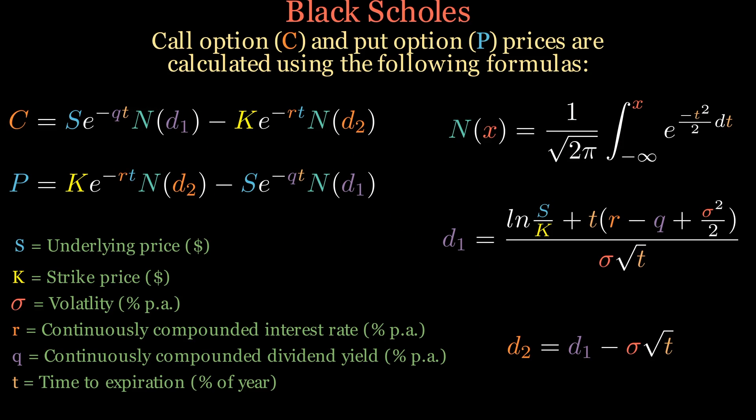The Black-Scholes formula takes into account various factors, such as the current stock price, the strike price, which is the value that the stock will be bought or sold if the option is exercised, the time to expiration, and the volatility of the stock.